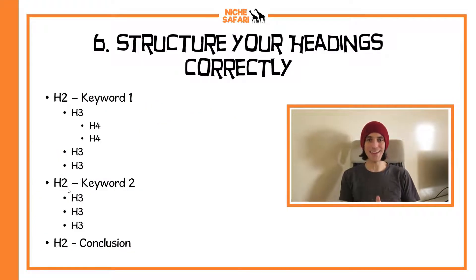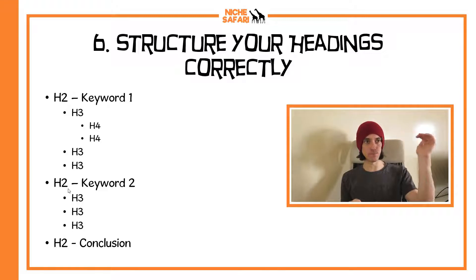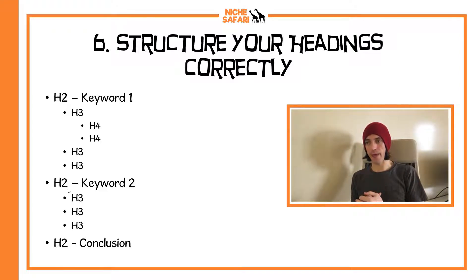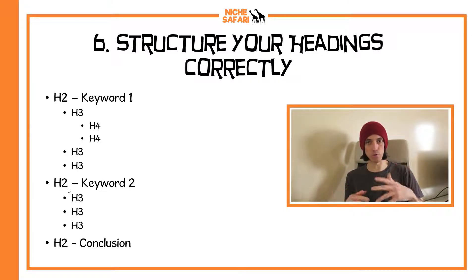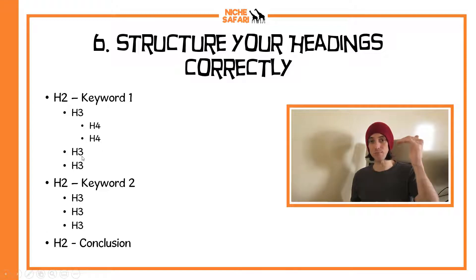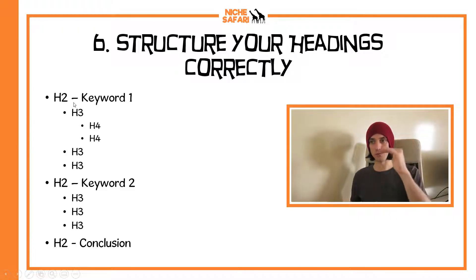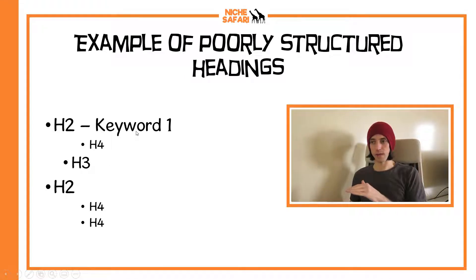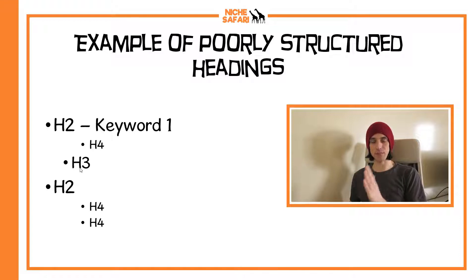Tip six: structure your headings correctly. Sometimes Google will create a list not from a bullet list on your post, but from your headings. For example, if your H2 is 'Types of Computer' and your H3s are '1. PC,' '2. Mac,' '3. Laptop,' '4. Chromebook,' etc., Google may take that H2 and all the H3s and turn them into a list. A correct format is H2 followed by H3, followed by H4, back to H3, then H2. A bad format would be jumping from an H2 straight to an H4 and then back to an H3. Try to maintain a proper hierarchy — that's what Google is most likely to take.